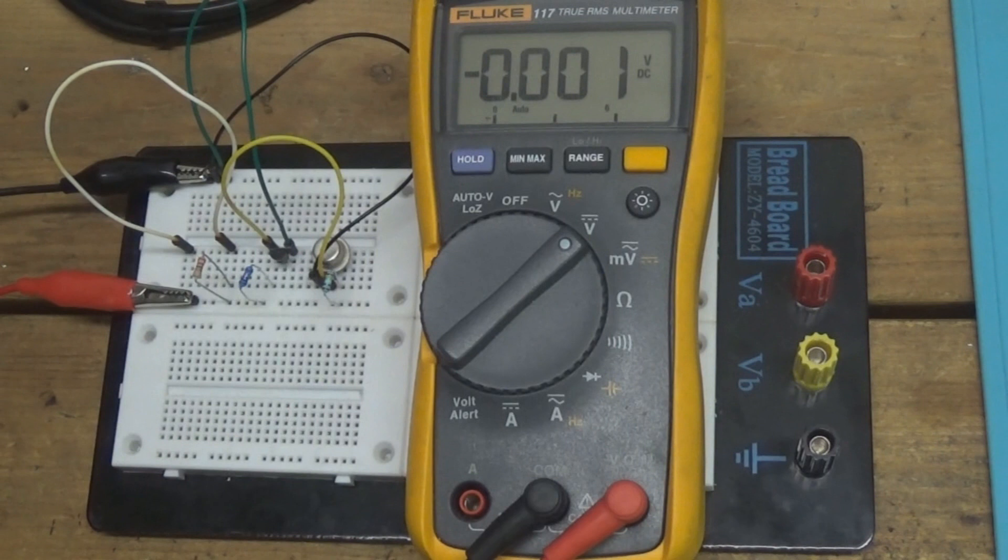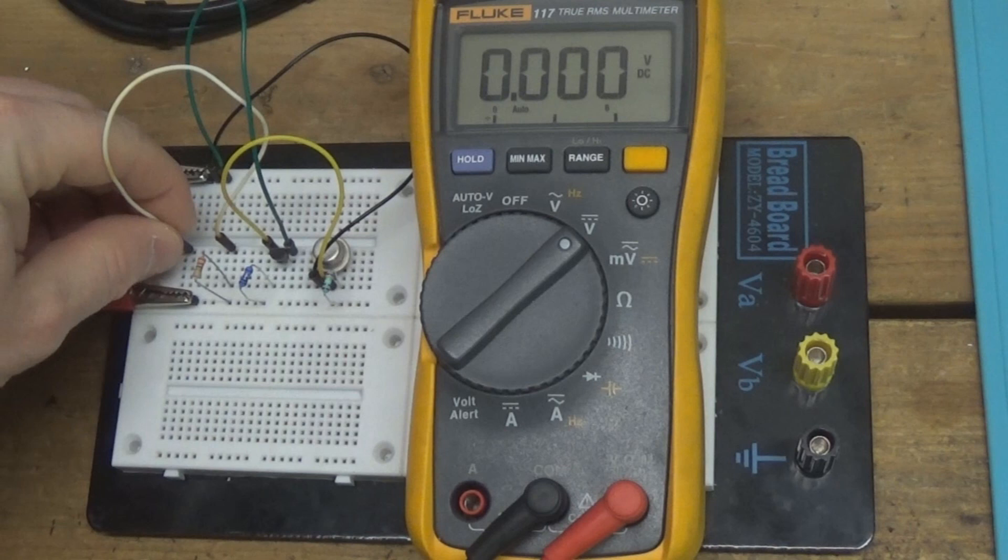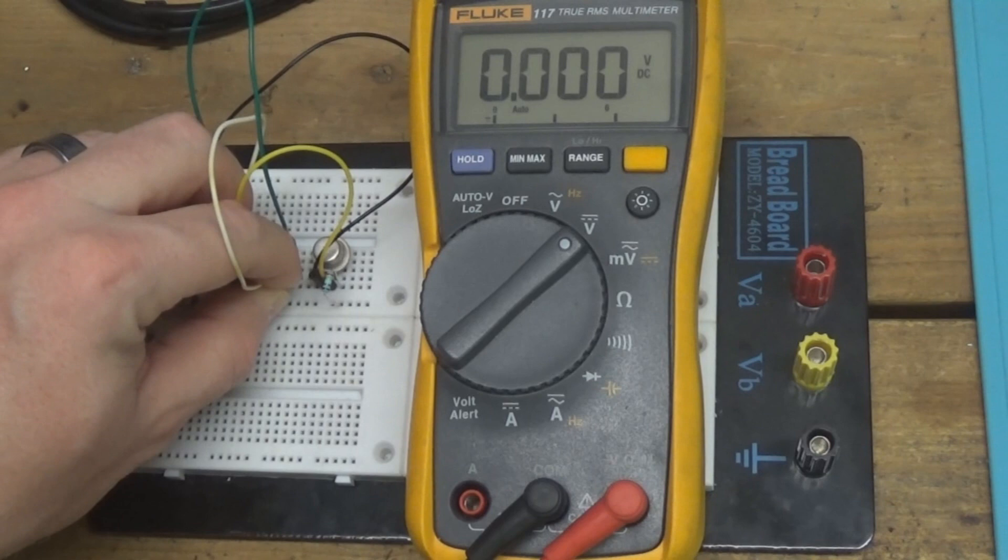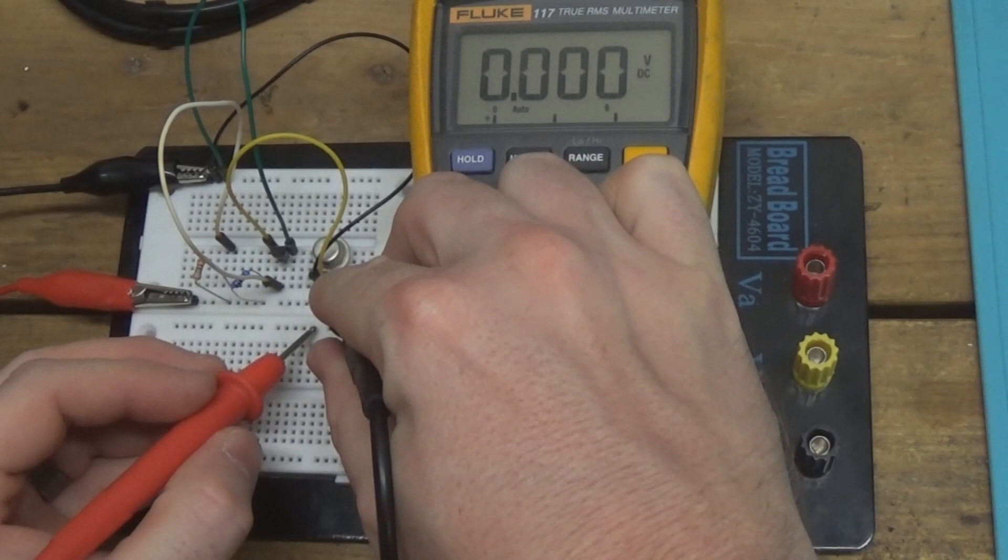And now let's actually attach some base current right here. And now we should see what our gain looks like. And we're getting 8.66 volts, so it's a tremendous gain. So let's take a look on the diagram and see what this means.